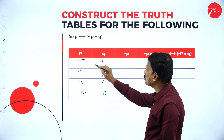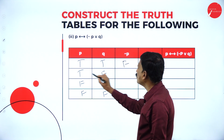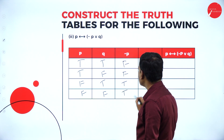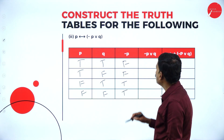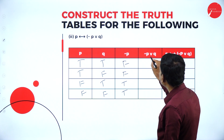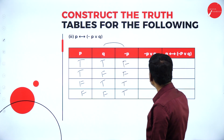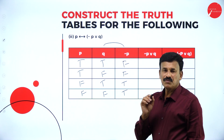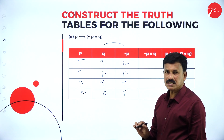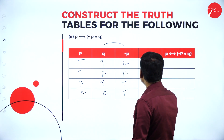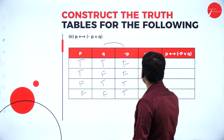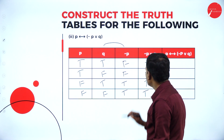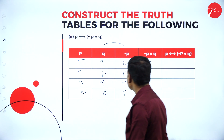Now negation of P: for T it is F, for T it is F, for F it is T, for F it is T. These two — negation P and Q — are connected by disjunction. In case of disjunction, false and false is false; in all other cases it is true. So: F and T is T, F and F is F, T and T is T, T and F is T. Result: true, false, true, true.